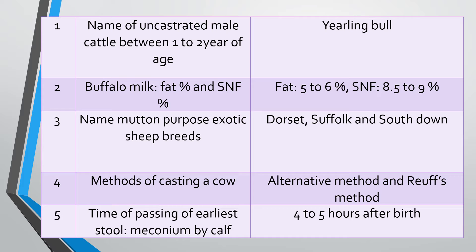Question five: Time of passing of earliest stool by a calf. The earliest stool of a calf is called meconium. When the calf is in the uterus of the mother, it ingests certain things and that becomes feces called meconium. Answer: Four to five hours after birth, the calf passes the meconium.